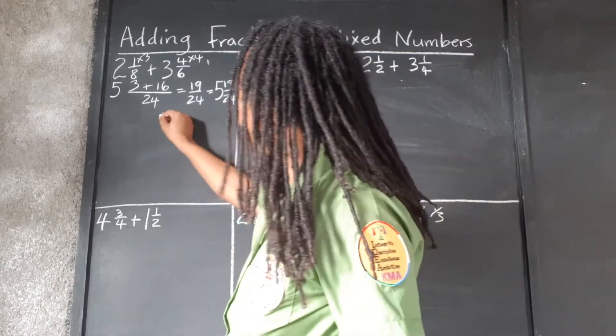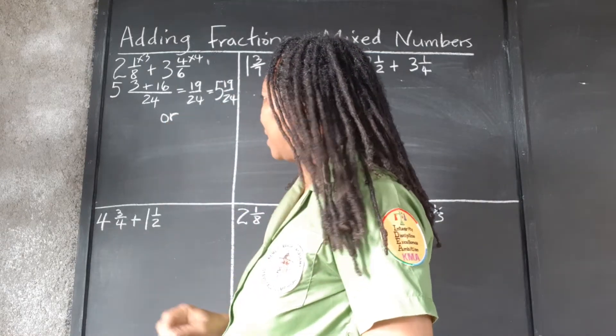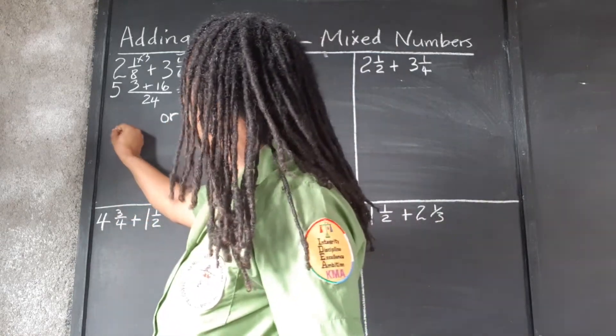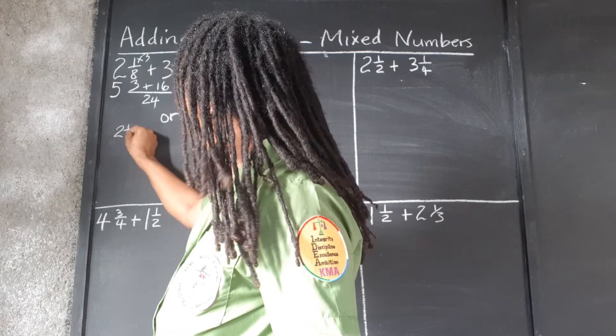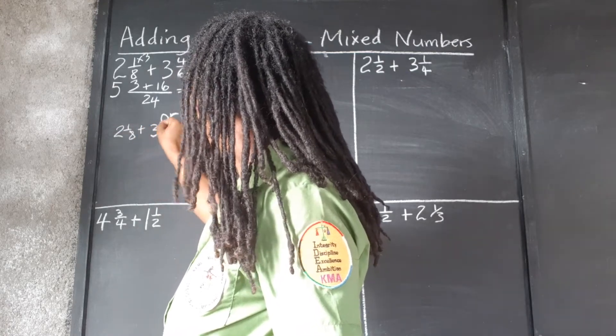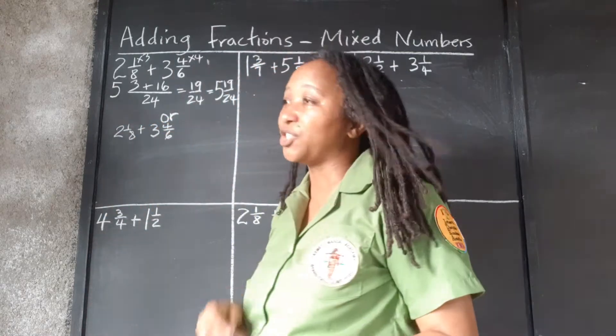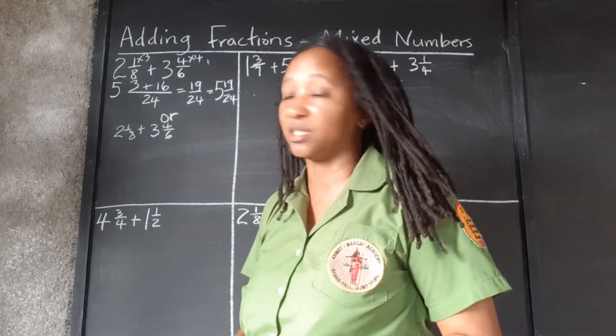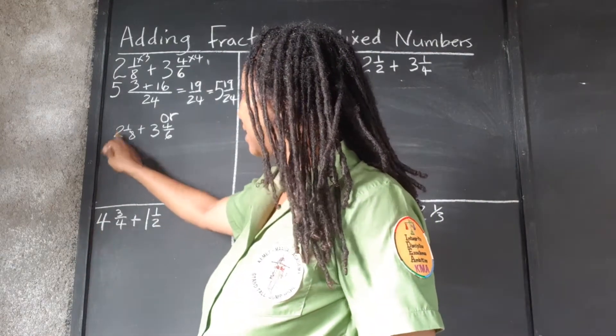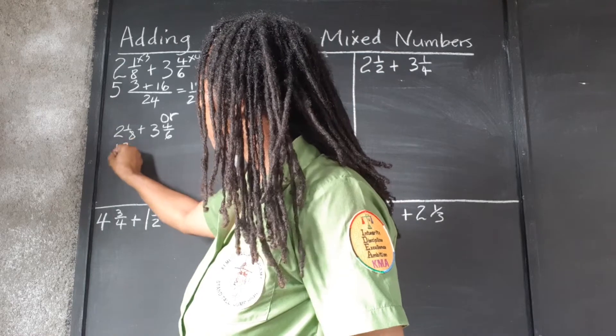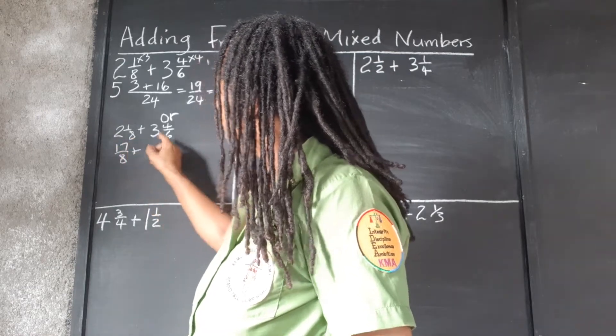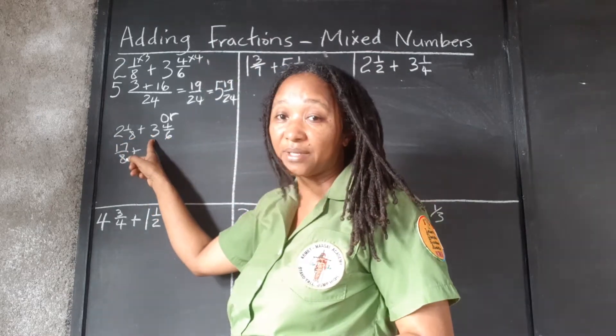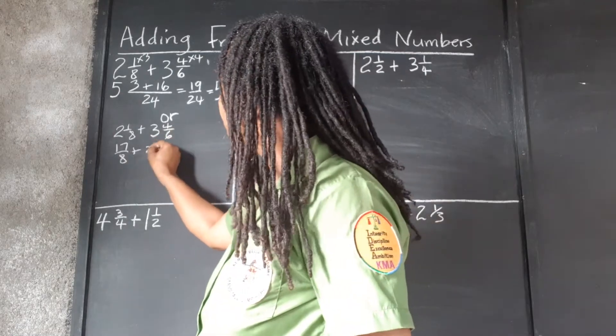So let's use the other method. So we have 2⅛ plus 3⅚. So we're going to change them to improper fractions. 8 times 2, 16 plus 1, 17 over 8. 6 times 3 is 18, plus 4, 22 over 6.